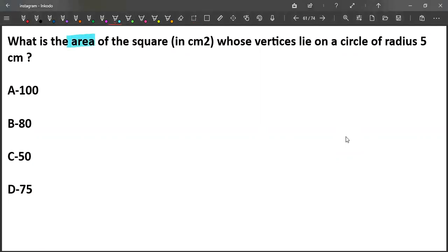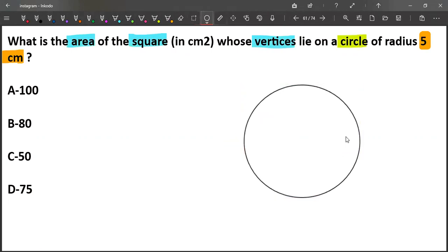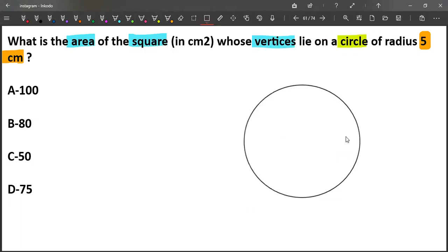We are asked to find the area of square. The vertices of square lies on a circle and the radius of that particular circle is 5 cm. We are having a circle and a square fell inside that circle.